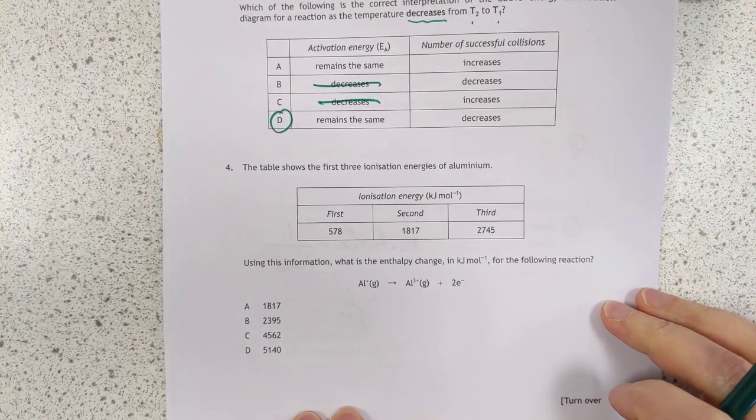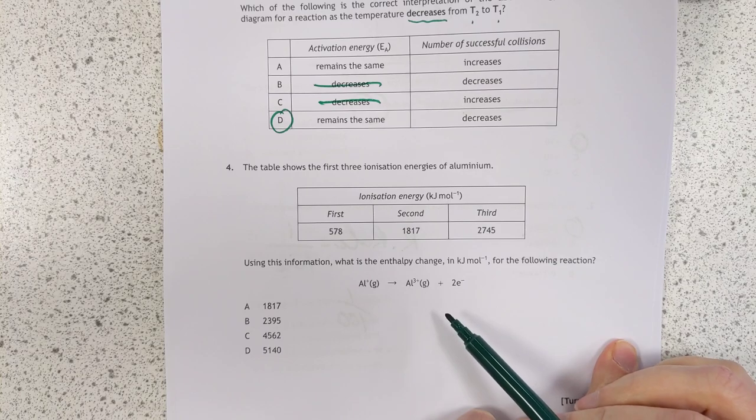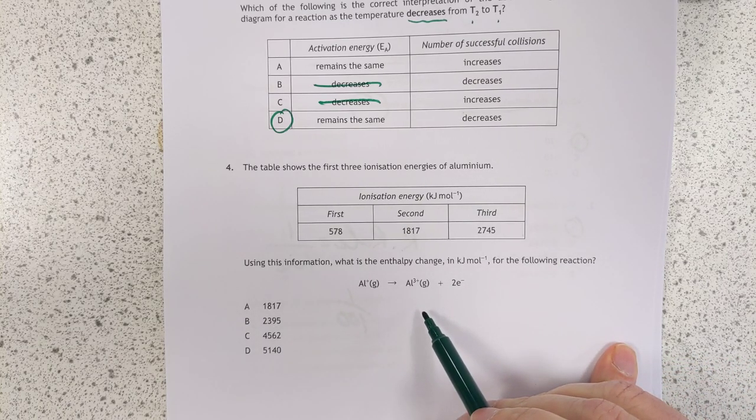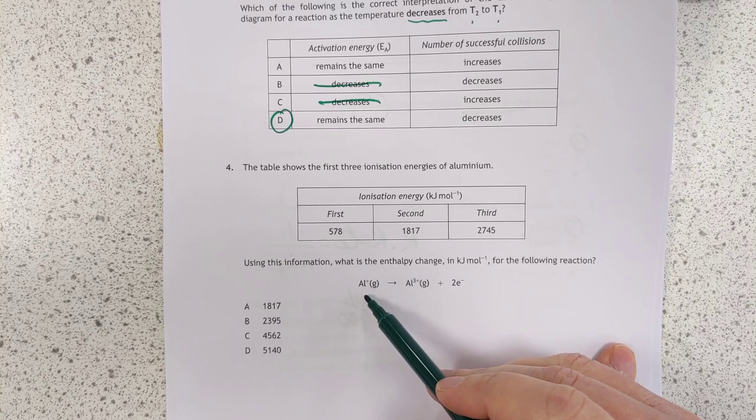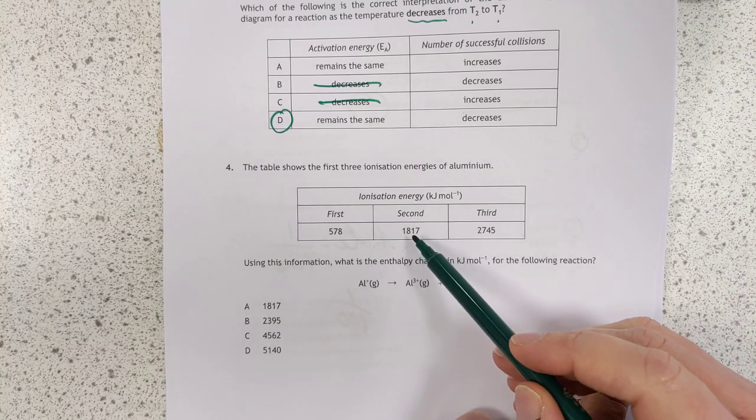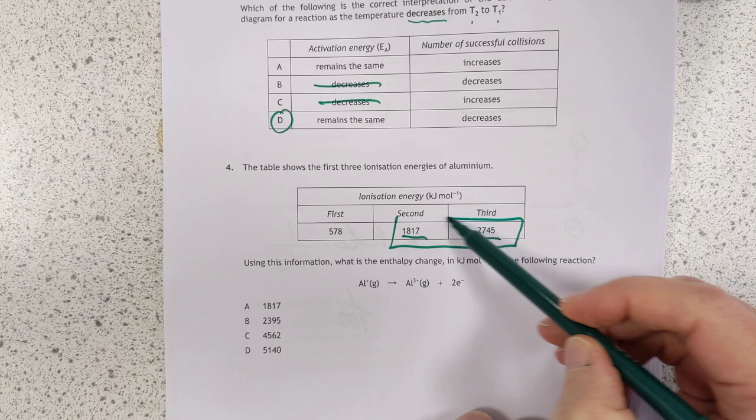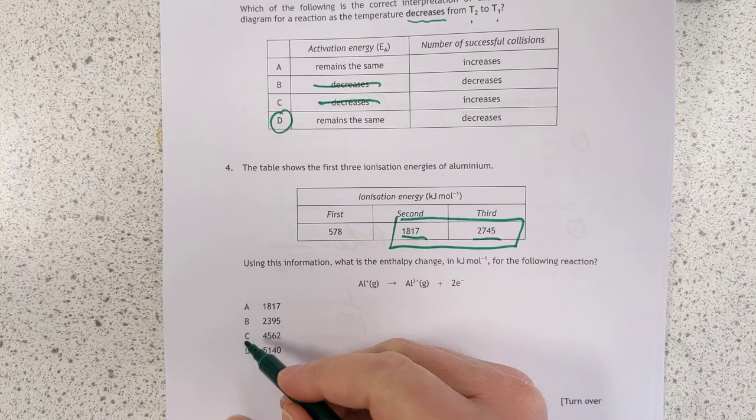Number 4. The table shows the first three ionization energies of aluminium. Using this information, what is the enthalpy change for the following reaction? That's sneaky. We're not starting at aluminium atoms. We're starting at aluminium 1+, going to 3+. So we're only stripping off two electrons. And the two electrons we're stripping off are the second and the third. So what we'll do is sum these two together. 1817 plus 2745 gives us 4562, which is indeed C.